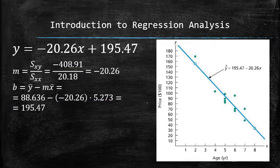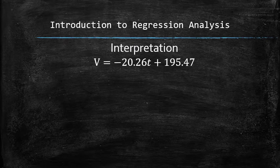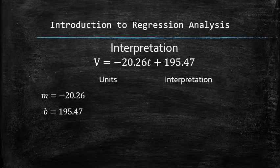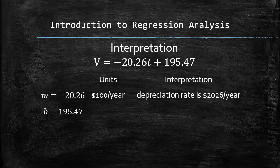Next, we are going to interpret the results. In applications, as I said before, everything in the equation and the graph will have units and its own interpretation. The slope, negative 20.26, has the unit $100 per year. In other words, the price goes down by $2026 every year due to aging.